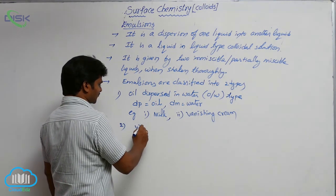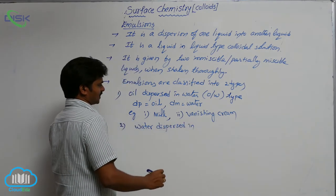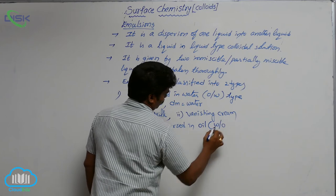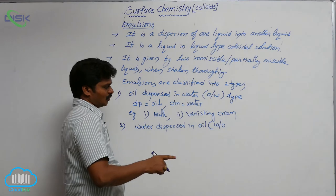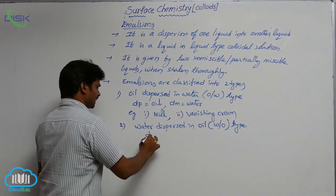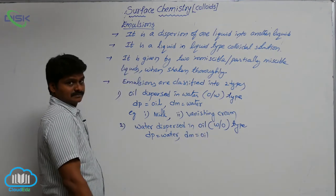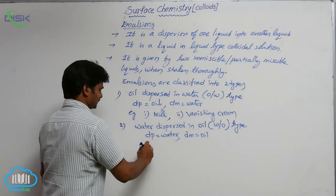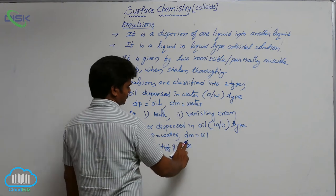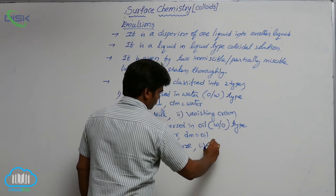The second type is water dispersed in oil, denoted by W/O. In this type, the dispersal phase is water and the dispersion medium is oil. Examples for this type are stiff grease and cod liver oil.